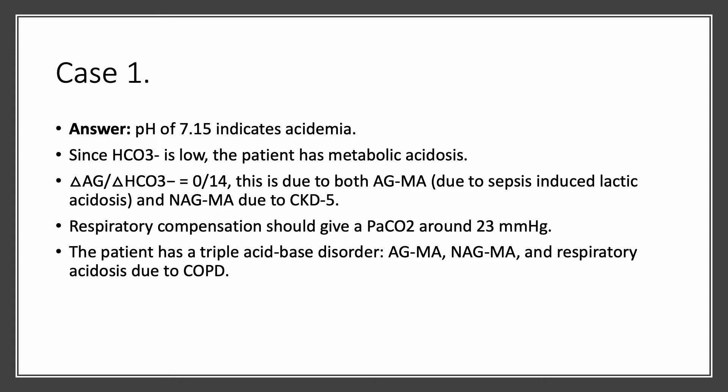But delta bicarbonate is 14, meaning bicarbonate dropped by 14 more than expected. So we have two types of metabolic acidosis. We have non-anion gap metabolic acidosis due to chronic kidney disease Stage 5, and we also have anion gap metabolic acidosis due to sepsis — here we have lactic acidosis. What is the respiratory compensation? When you have a drop in bicarbonate by 10 from 24 to 10, the PaCO2 should drop to about 23. But here we have PaCO2 that is 30, so it is high. That is because we have respiratory acidosis, usually chronic due to COPD.